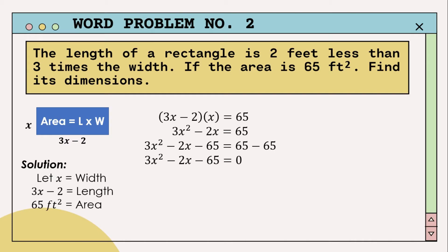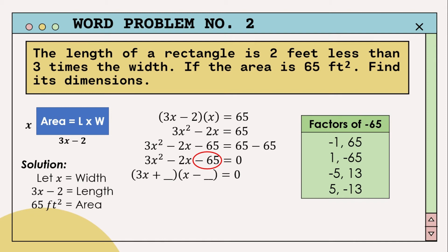Since the equation is set equal to zero, it is time to factor. For this trinomial, the factoring must take the form: quantity (3x plus blank) multiplied by quantity (x minus blank) equals zero, since 3x and x are the factors of the first term 3x squared. Now we need to determine the two numbers for the blank spots by finding the factors of the third term, negative 65. These are: negative 1 and 65, 1 and negative 65, negative 5 and 13, and 5 and negative 13.